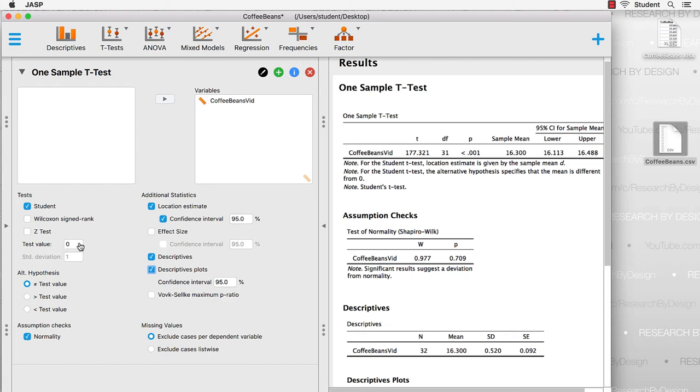If something looks really wrong with your one sample t-test, most likely here's what you've done. You must set the test value to the mean of the population. So remember, our coffee bags were supposed to weigh 16 ounces. Let's put 16 in as our test value. Now we get numbers that make a lot more sense, a t of 3.264.